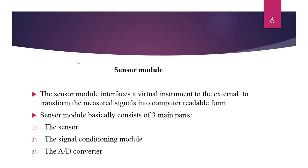The sensor module consists of three main parts. The first is the sensor, which detects the physical signal from the environment. The second is the signal conditioning module, which performs amplification, isolation, filtration, and more for the detected signals. The third is the analog-to-digital converter, which changes the detected and conditioned voltage into a digital value.